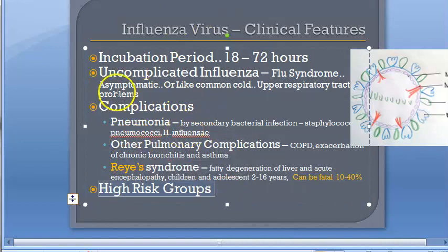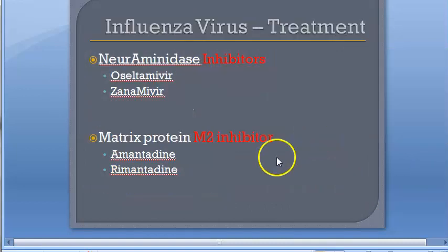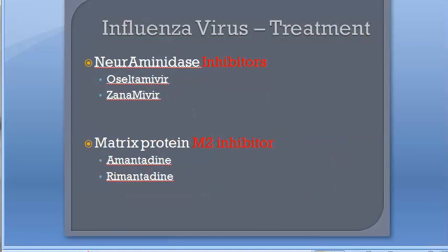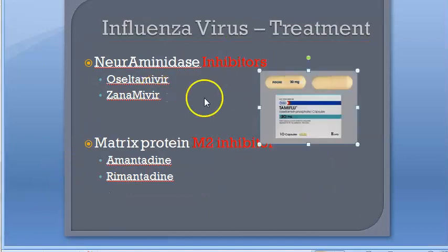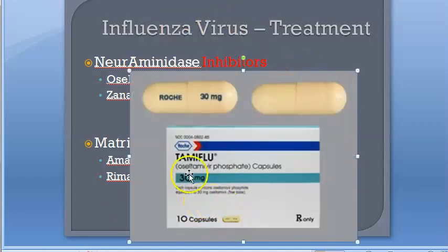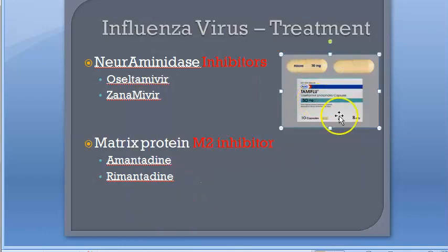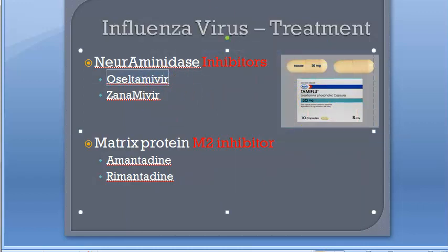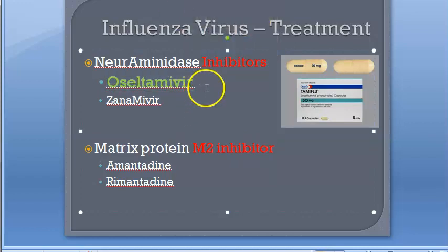High-risk groups include children, pregnant women, and immunocompromised individuals. For treatment, oseltamivir is very important — it comes as oseltamivir phosphate capsules under the brand name Tamiflu. Writing 'Tamiflu' in the exam will also fetch marks. Remember oseltamivir for influenza.